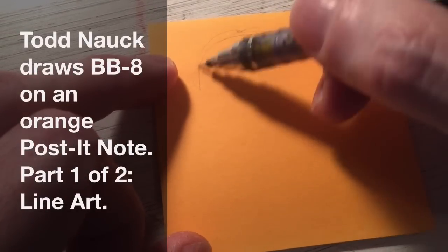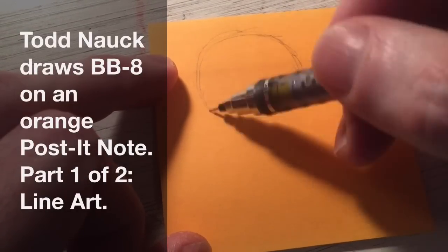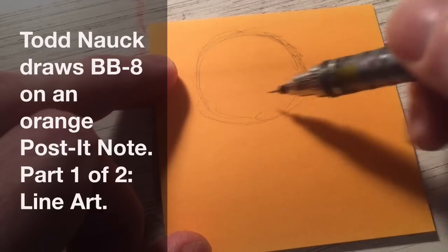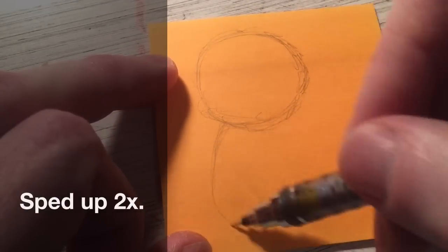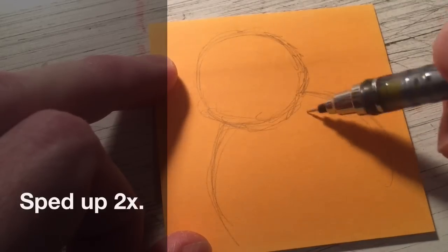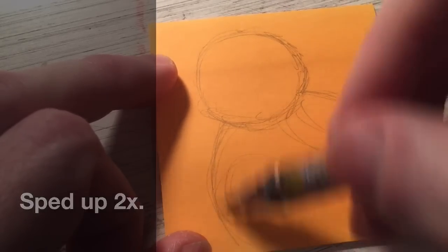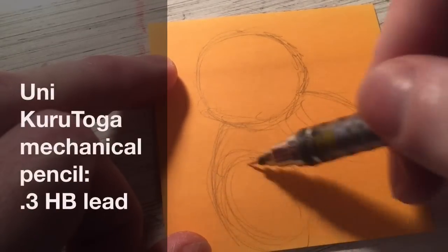Hey there, gang. Welcome to my new two-part video series. I'm Todd Nock, and this time I'm drawing BB-8 from Star Wars The Force Awakens on an orange post-it note. This video is sped up to two times the normal speed, and here we go.